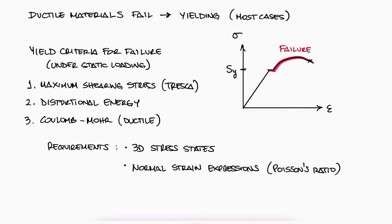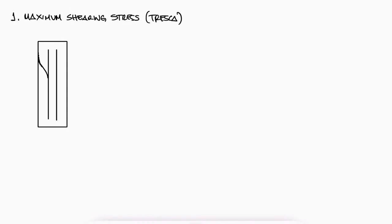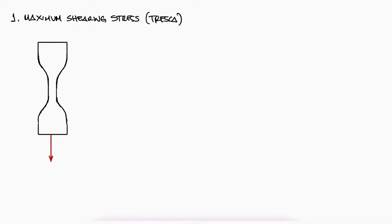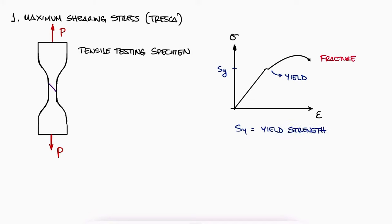The maximum shearing stress criterion, or Tresca, states that yield will occur if the maximum shearing stress exceeds the maximum shearing stress generated during tensile testing. When these dog-bone-shaped tensile specimens are subjected to tensile testing to obtain the stress-strain curves, both the yield and the fracture of the specimen will happen in slanted planes within the microstructure of the material, that have a 45 degree angle, and that are commonly known as slip lines.